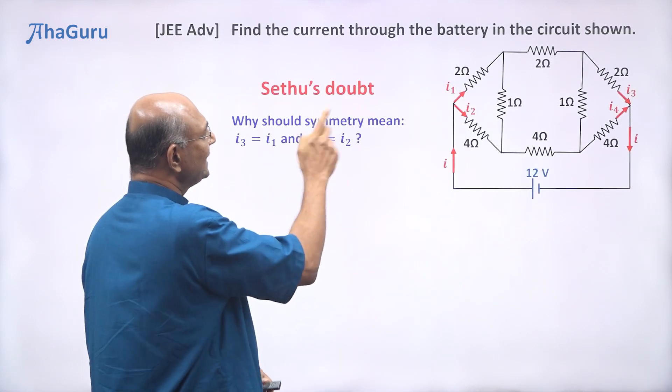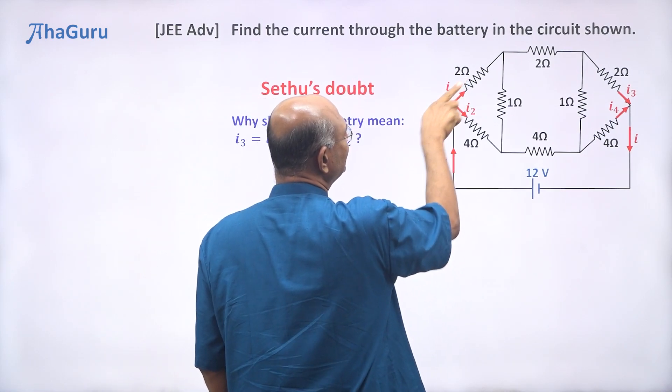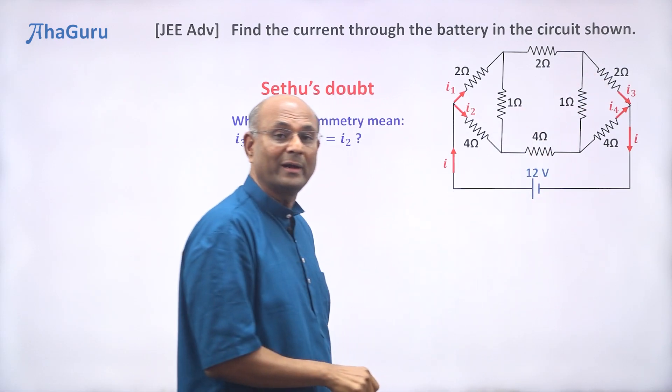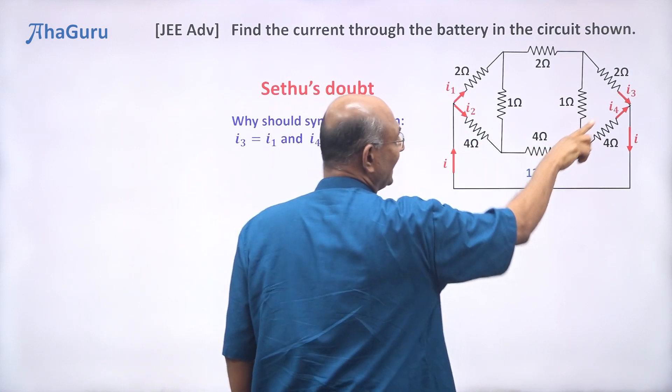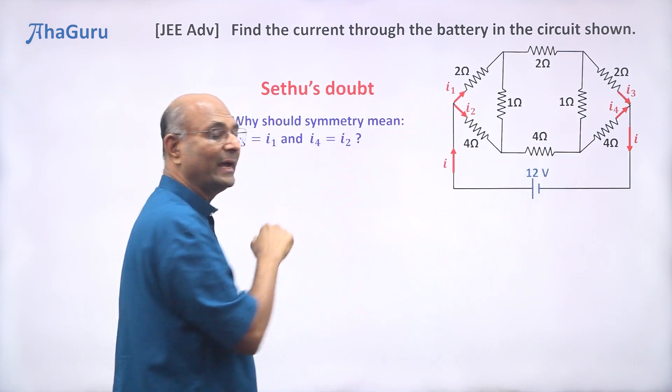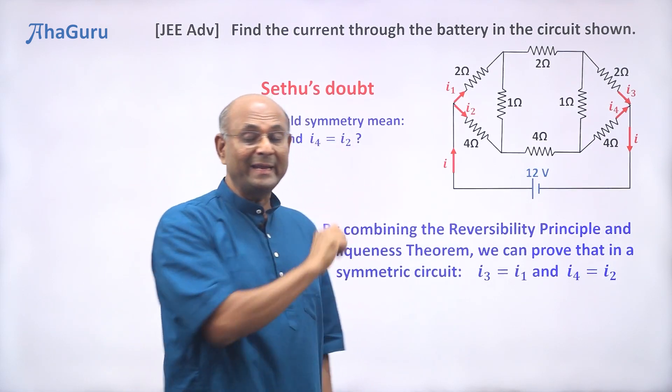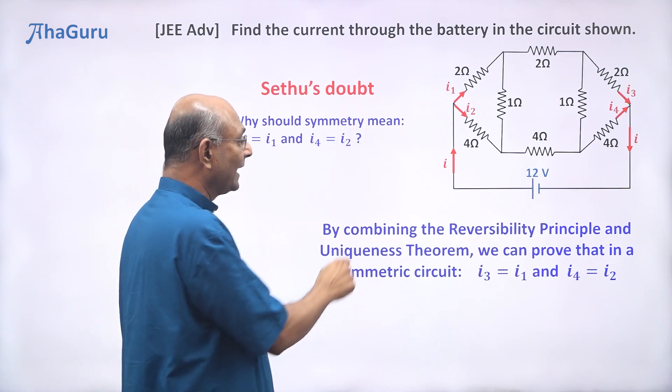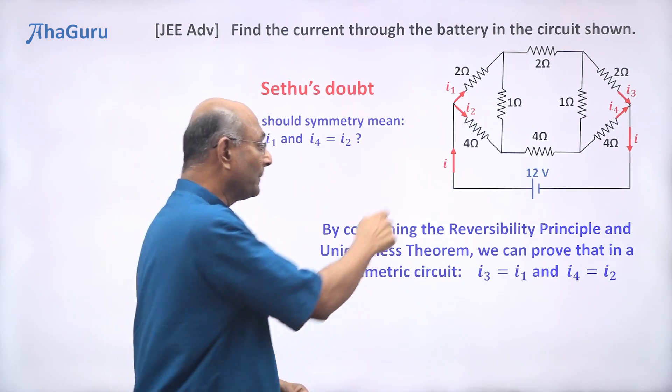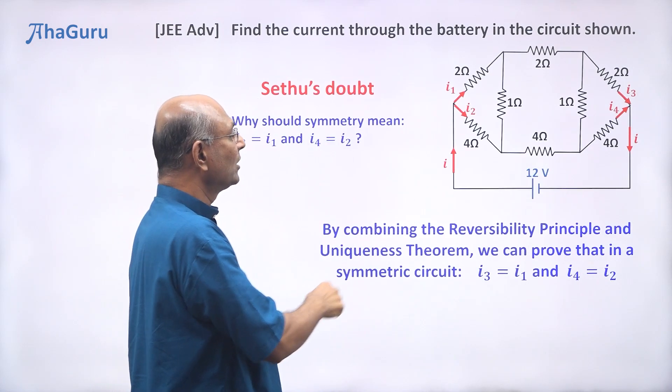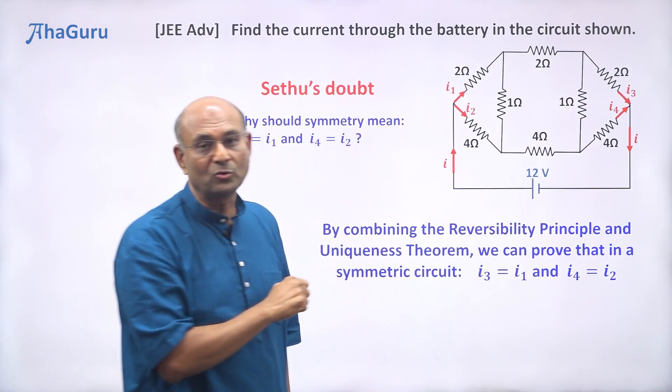We have now learned two important circuit principles. How is that related to Seidhu's doubt? Let us get to Seidhu's doubt. Seidhu's question is for a symmetric circuit, why should symmetry mean that if this current is I1, that also must be I1? Why should that current I3 be equal to I1? Similarly, why should this current I4 be equal to I2? He wants a proof for this. I am going to tell you that by combining the reversibility principle and the uniqueness theorem, which are general statements, not only for symmetric circuits - but if you combine these two, for a symmetric circuit, we can prove that I3 must be equal to I1 and I4 must be equal to I2.